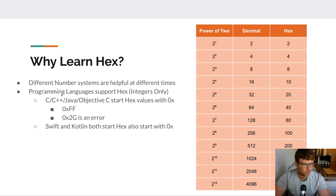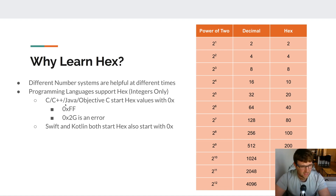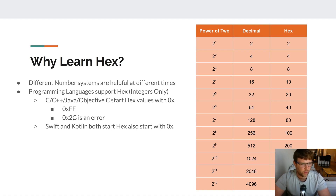Programming languages support hex for integers — no fractional portions though. All of these languages prefix hex literals with 0x (which can be uppercase). C++, Java, and Objective-C all start hex values with 0x. Swift and Kotlin also use the 0x prefix. If you try to use 0x2G, that's an error because G is not a valid hex digit. The case of the letters A through F doesn't matter in most languages.